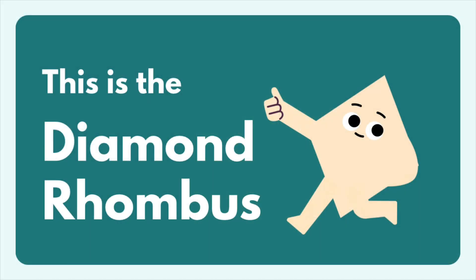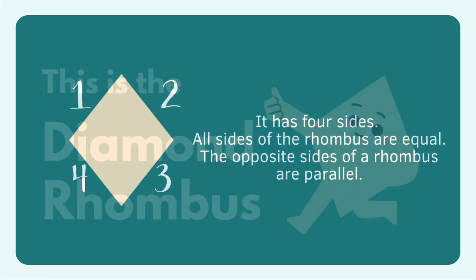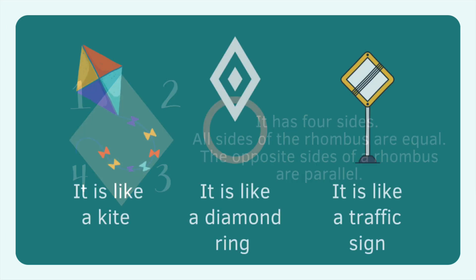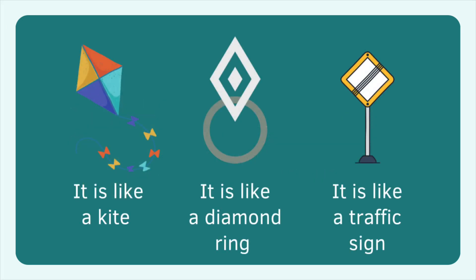This is the diamond, or rhombus. It has four sides. All sides of the rhombus are equal. The opposite sides of the rhombus are parallel. It is like a kite, a diamond ring, or a traffic sign.